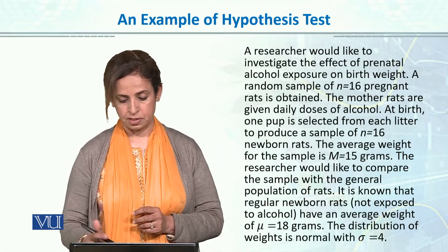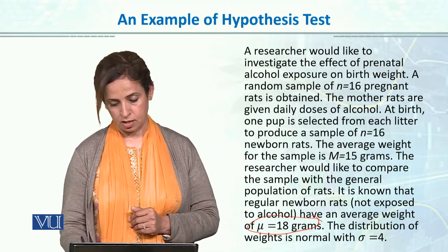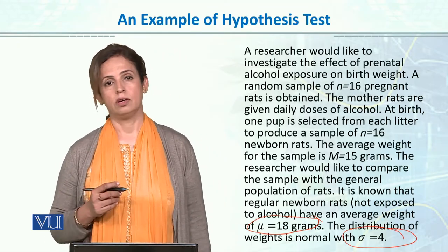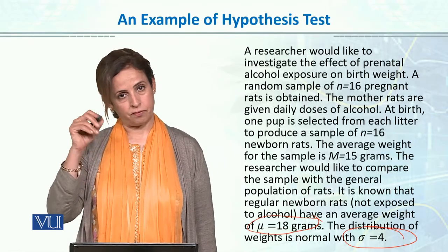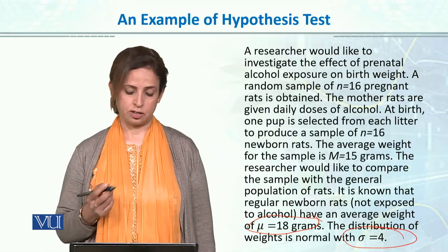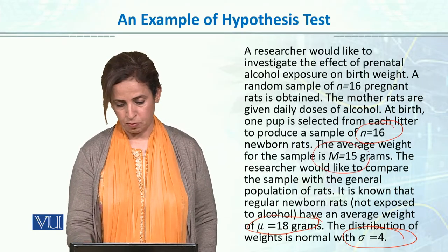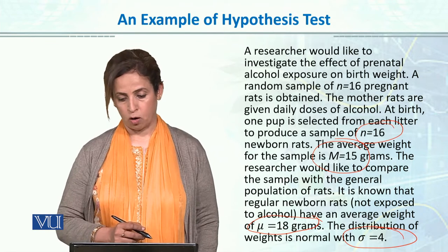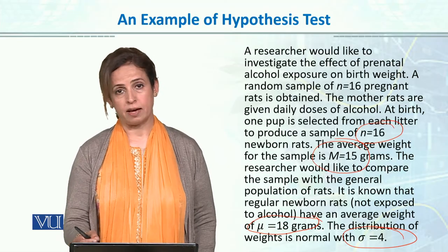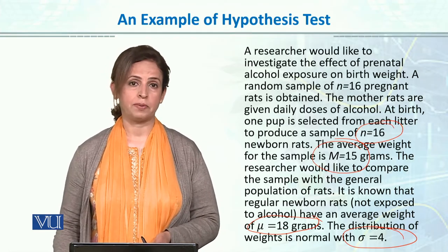What information is given to you? You have mu given to you — the population mean is 18 grams. You also have the standard deviation given. Remember, when both mu and sigma are given, you can simply go to the normal distribution, find the Z score, and interpret the information accordingly. We also have N, and we have the sample mean, which is 15 grams. So we have sample size N, sample mean, population mean, and population standard deviation.